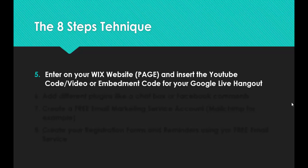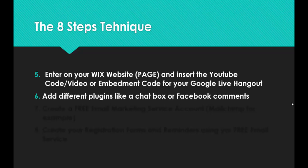Step number five is to go to your Wix website page that you have created and insert the YouTube video code or embed code for your Google Live Hangout wherever you want the video — the actual webinar — to appear on the page. You can also add different plugins there, like a chat box or Facebook comments, and I will show you an example of that.